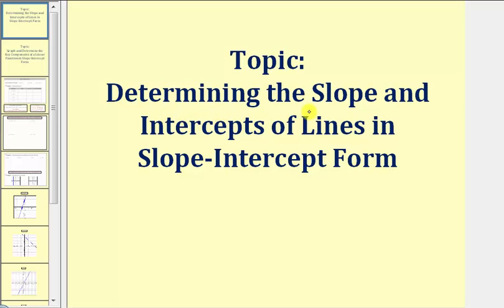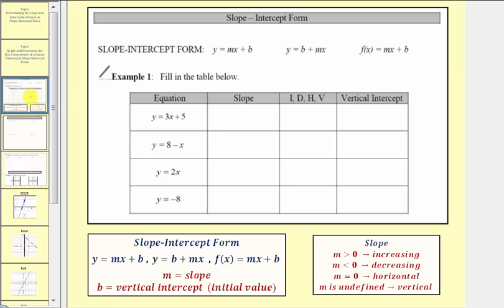Welcome to a lesson on determining the slope and intercepts of lines in slope-intercept form. A linear equation is in slope-intercept form if it's in any of these three forms: the most common form is y equals mx plus b, which can also be written as y equals b plus mx, or using function notation, f of x equals mx plus b.